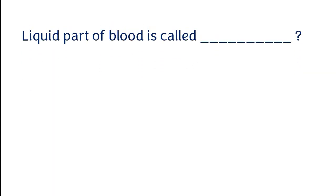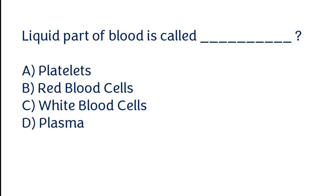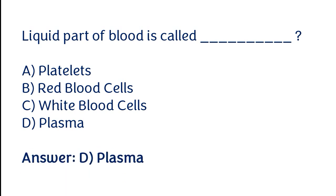The liquid part of blood is called: platelets, red blood cells, white blood cells, or plasma. The correct answer is option D — the liquid part of blood is called plasma.